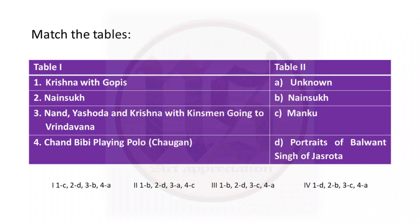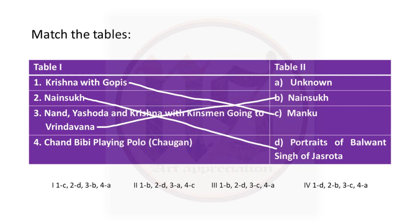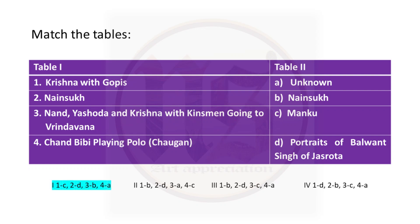Now we come to match-the-tables questions. First, Krishna with Gopis is painted by Manku. Second, Nain Sukh painted portraits of Balwant Singh of Chisrota, his patron, depicting him doing various activities. Third, Nandi Yashoda and Krishna with Kinsmen going to Vrindavan is done by Nain Sukh. Fourth, Chand Bibi playing Polo — Chogan Players — the artist is unknown. So the answers are: 1C, 2D, 3B, and 4A.